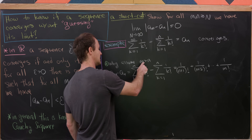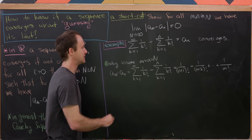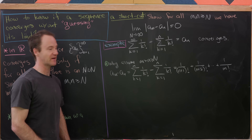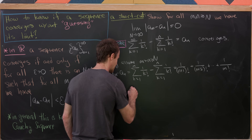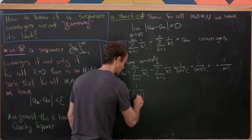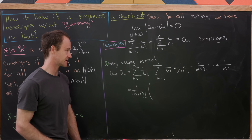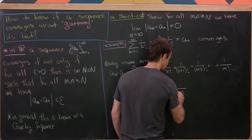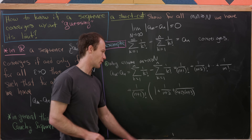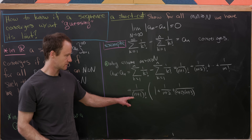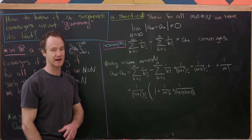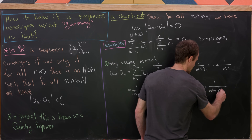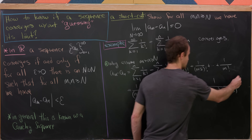With m > n ≥ capital N, we can factor out 1/(n+1)! as the greatest common factor from the denominator. That leaves us with 1/(n+1)! times the quantity: 1 + 1/(n+2) + 1/((n+2)(n+3)) + ⋯ up to the top term involving m·(m−1)·…·(n+2).